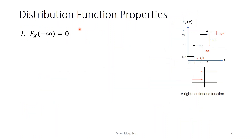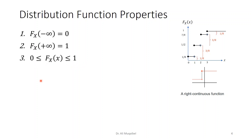For any cumulative distribution function, there are some properties. First, the accumulation at minus infinity should be 0. At infinity, it should be 1, because we have accumulated all possibilities. Third, for any value of x between minus infinity and plus infinity, the CDF gives a value between 0 and 1. Fourth, the CDF is a non-decreasing function — it either stays the same or increases. Mathematically, if x1 is less than x2, then the CDF at x1 is less than or equal to the CDF at x2.